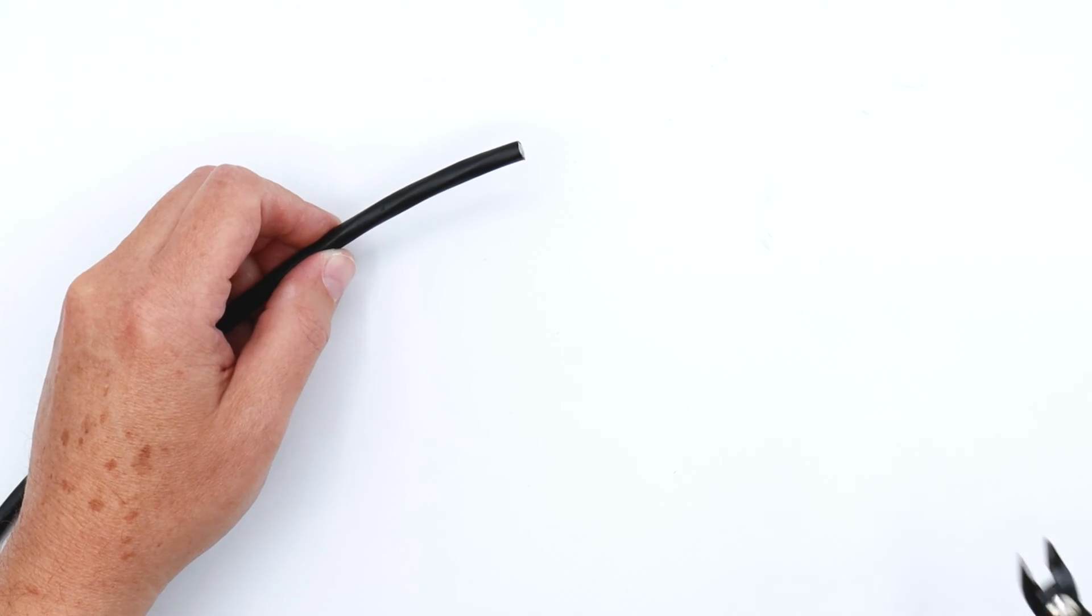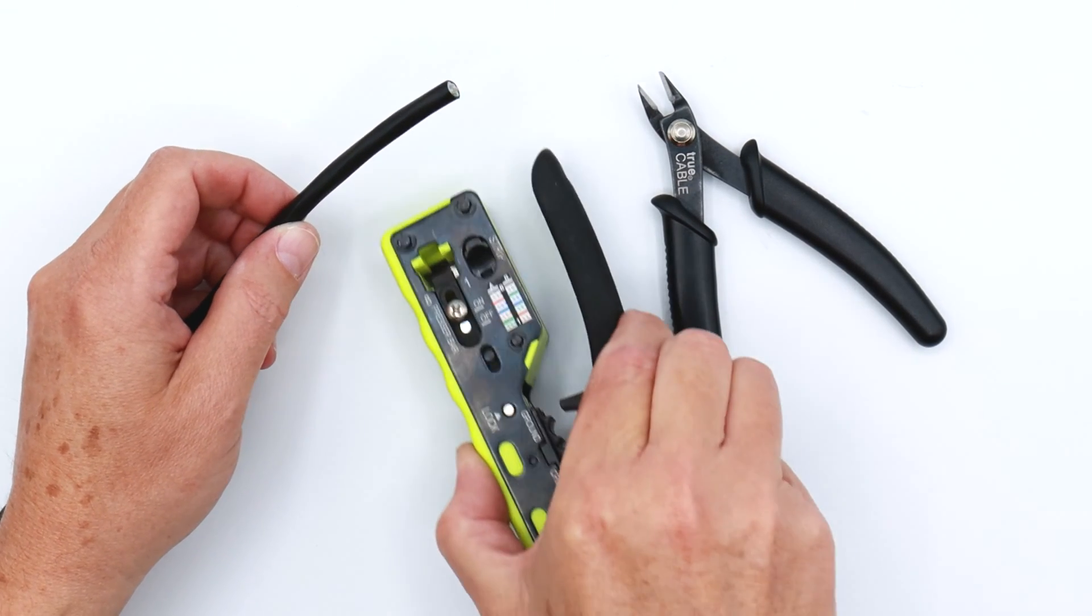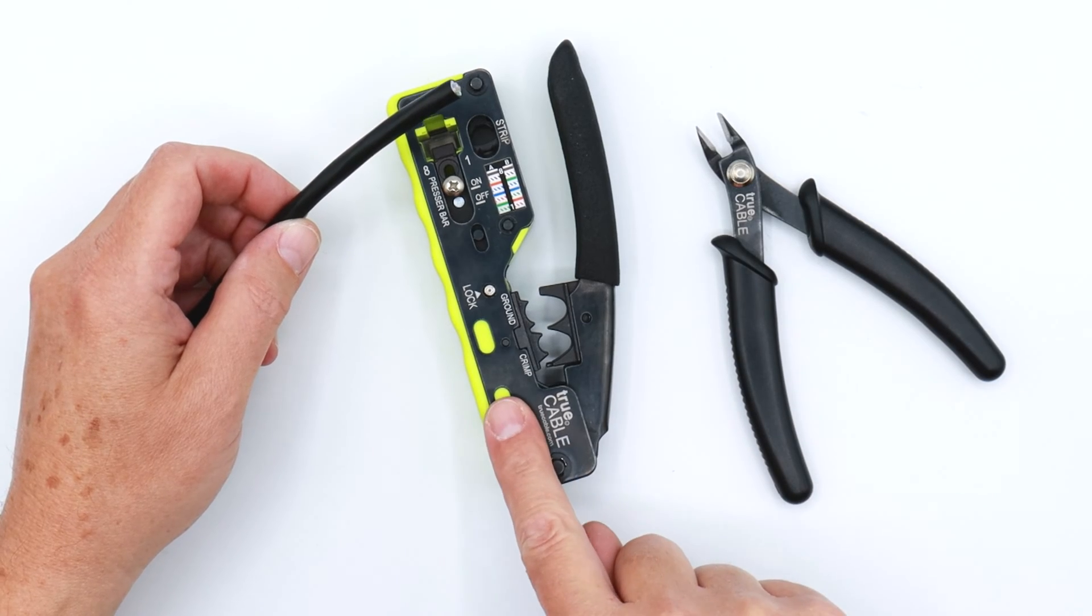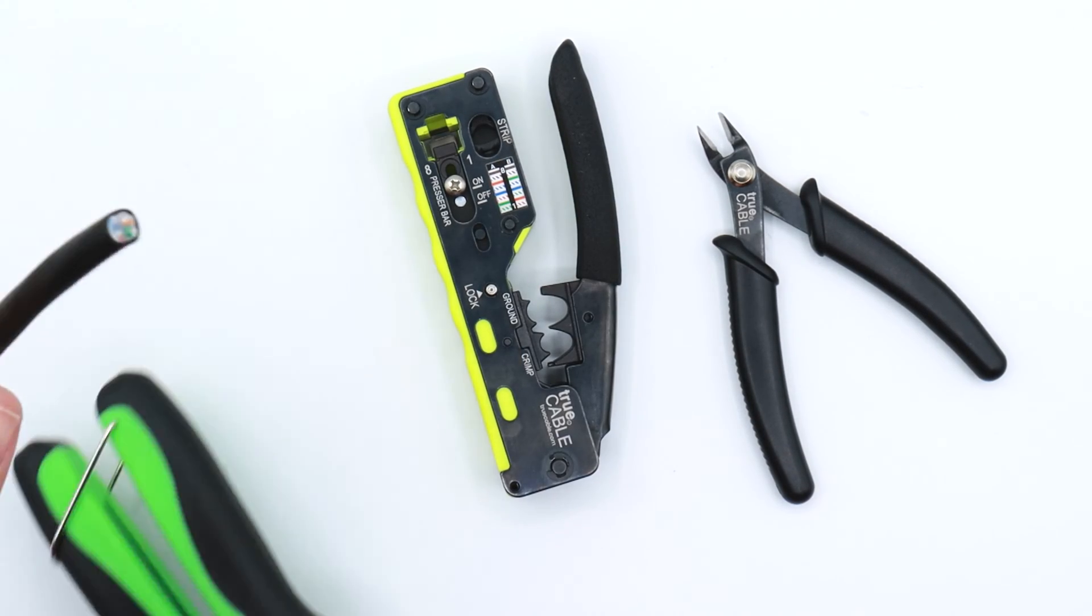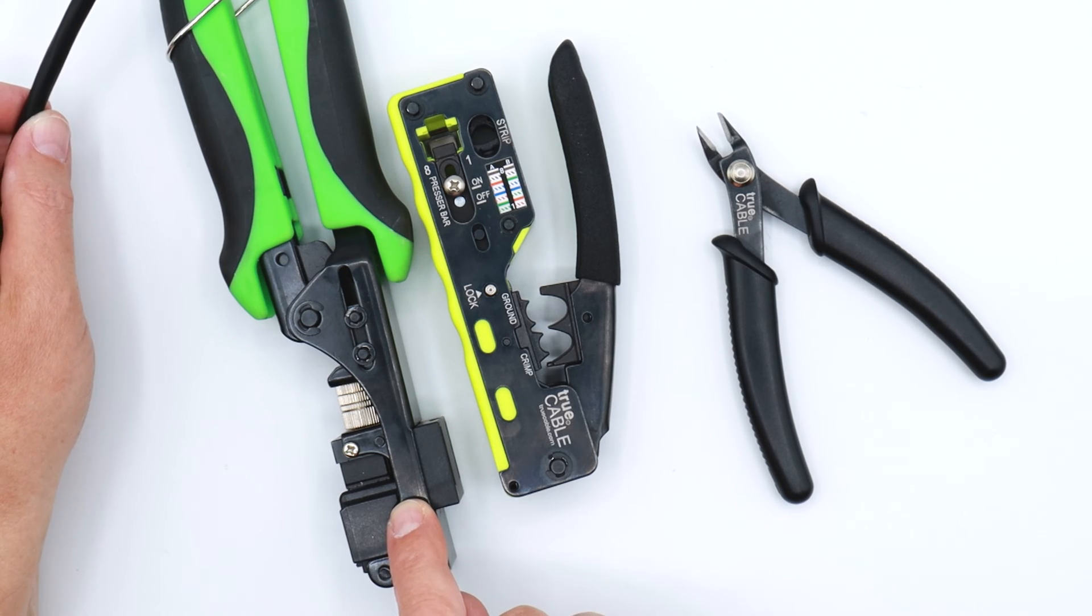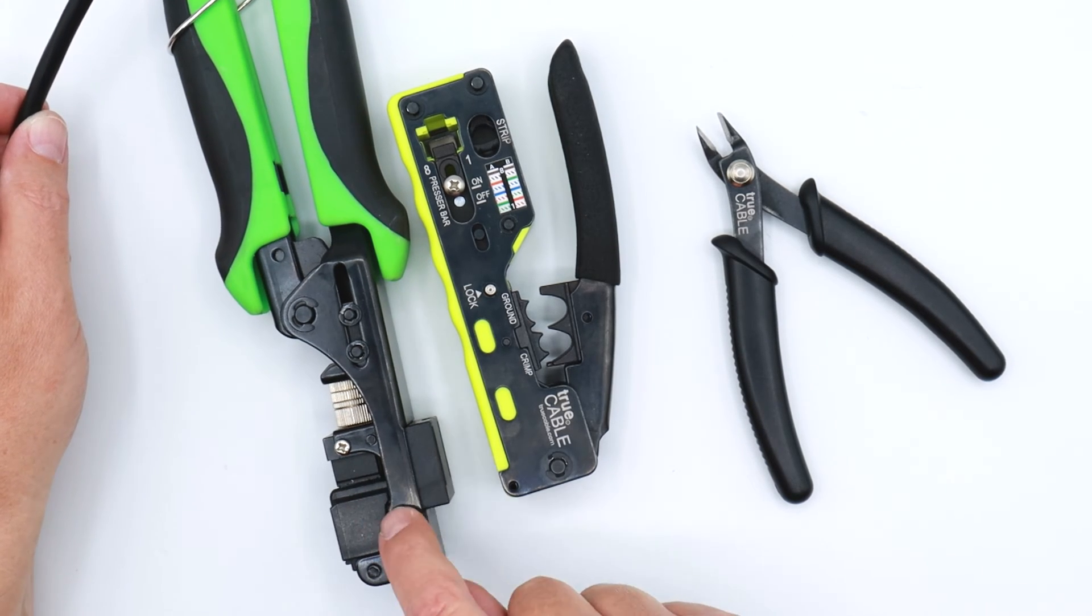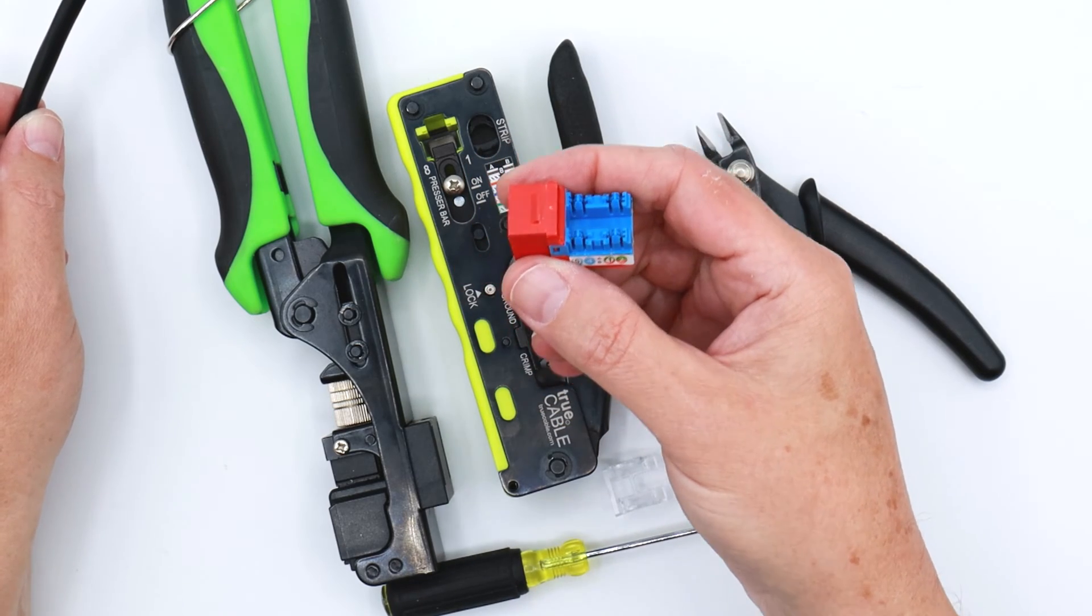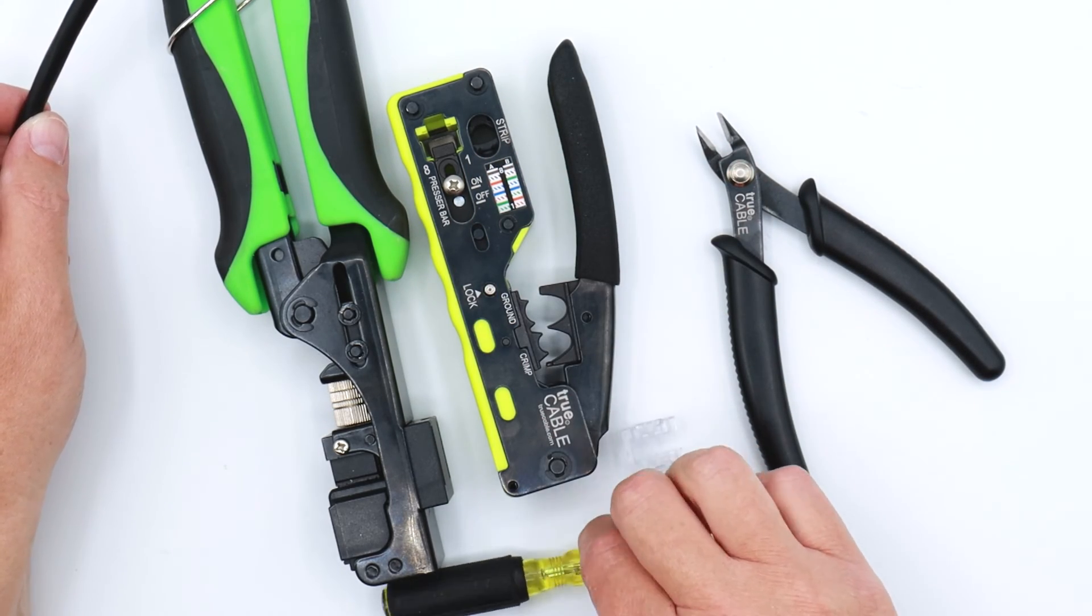We're going to need our flush cutters. We're going to need our all-in-one crimp and termination tool just for the stripper portion. And then the most important tool of all is our Rapid Easy Term tool, which flush cuts and seats all the conductors in the keystone all at one time, which is extremely useful.